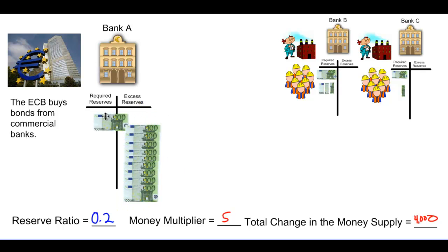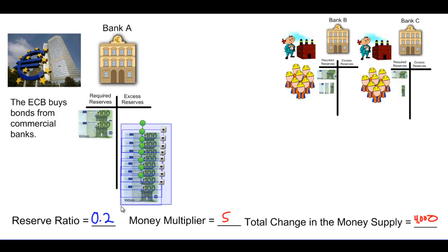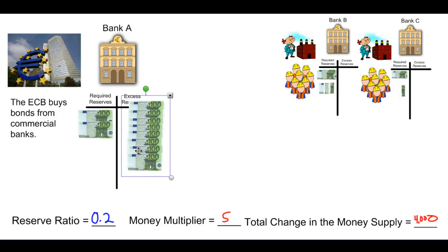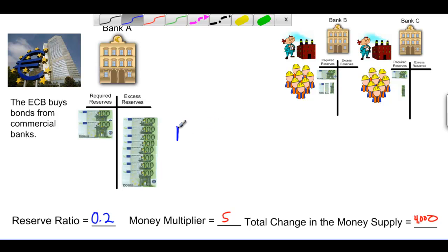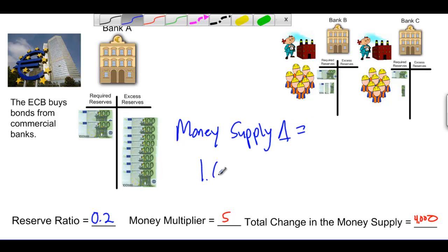However, the difference now is that the change in the money supply will be equal to the initial change in deposits multiplied by the money multiplier. Money held at a central bank is not considered part of the money supply. Therefore, when the European Central Bank buys bonds, the total change in the money supply equals €1,000 times the money multiplier of 5, which is €5,000.